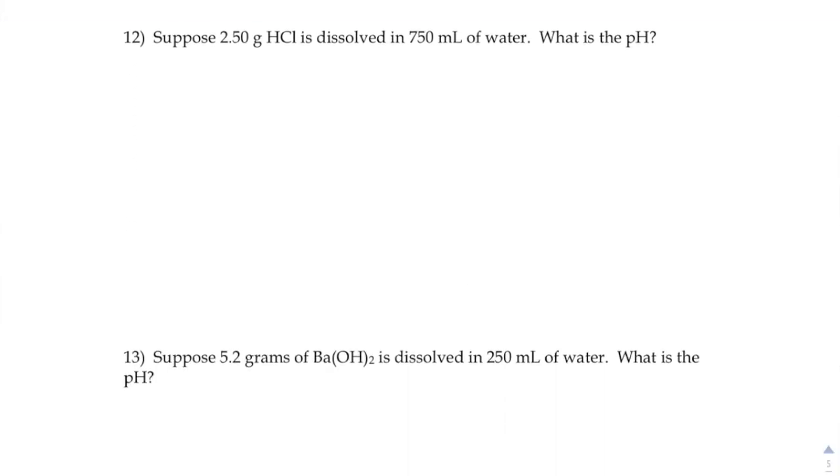Okay, suppose you have 2.5 grams of hydrochloric acid dissolved in 750 milliliters of water and it wants the pH. Well, if we want the pH we need the molarity, and what we have right now isn't a molarity—it's a density is what they gave us. They told us how many grams are dissolved per how many milliliters.